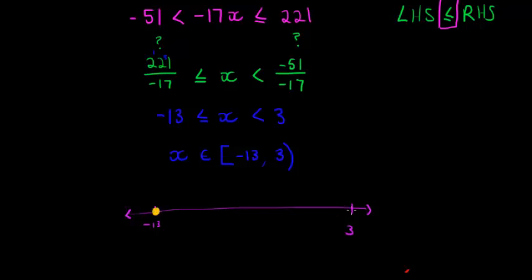Three is excluded, so it's an open dot, and everything in between is included, so either thick line or different color to indicate the set on this number line.